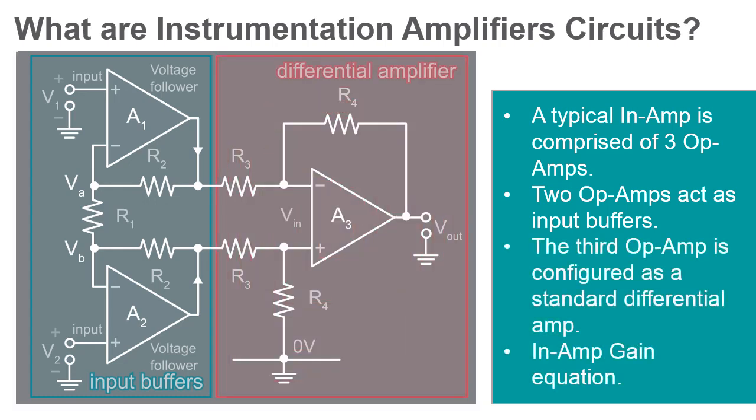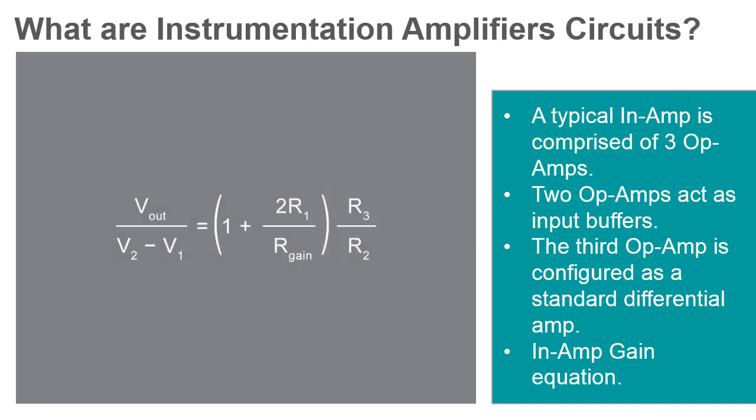The gain equation for the most commonly used instrumentation amplifier is as follows: Vout over V2 minus V1 equals 1 plus 2R1 over Rgain, times R3 over R2. As operational amplifiers is often shortened to op-amps, instrumentation amplifiers is often shortened to in-amps.